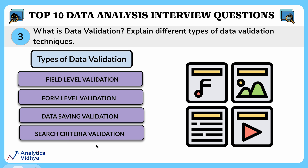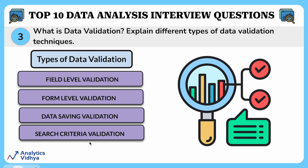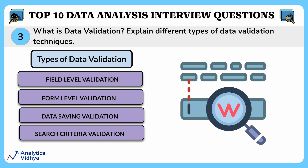Finally, search criteria validation is used to check whether valid results are returned when the user is looking for something. Think of this like using a search engine, where you make sure your search terms are clear and will give you the right results. So this is a basic idea about different types of data validation techniques.